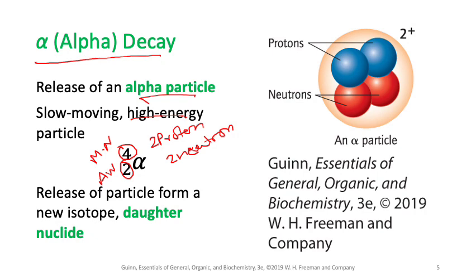An alpha particle is symbolized by the Greek letter alpha. You can also denote it using the element symbol for helium — He with mass number 4 and atomic number 2 — because helium has the same number of protons and mass number as an alpha particle. Some books use alpha, some use helium; both mean the same thing.